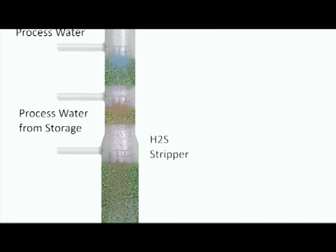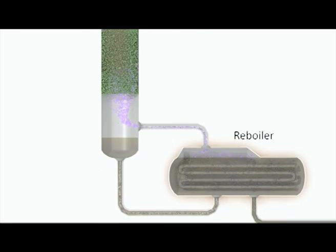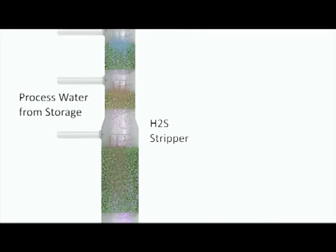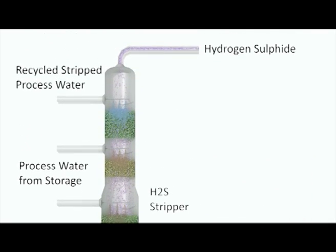The liquid then collects in the bottom of the column while the hydrogen sulfide vapor continues to rise and exits at the top of the stripper. This mechanism ensures the process meets the required purity of the hydrogen sulfide leaving the stripper.